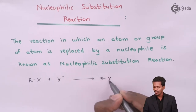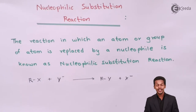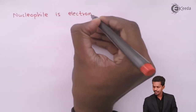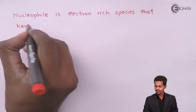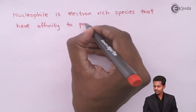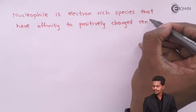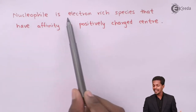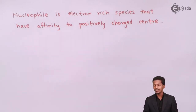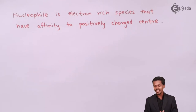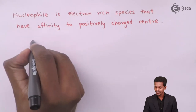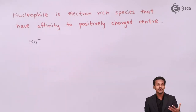The product we get is RY plus X⁻. A nucleophile can be defined as an electron-rich species that has affinity towards a positively charged center. The name 'nucleophile' itself means: 'nucleo' refers to positively charged species, and 'phile' means affinity or attraction towards positively charged species. So a nucleophile is a negatively charged species that has more affinity towards positively charged species.